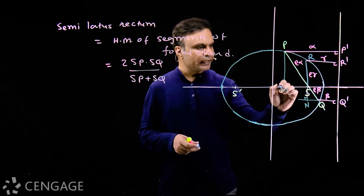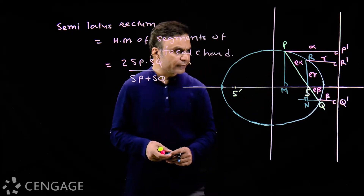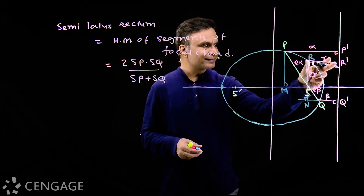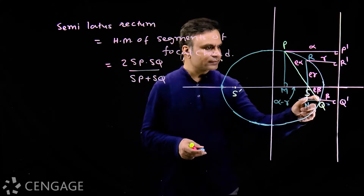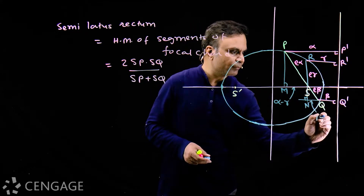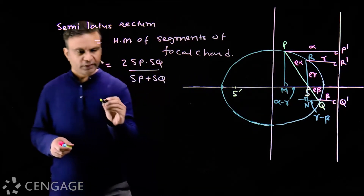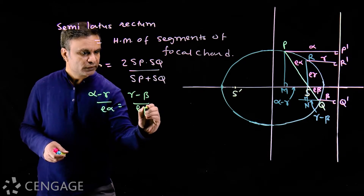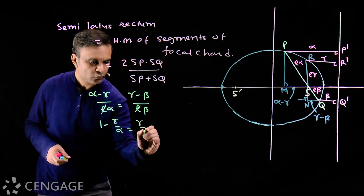We have two similar triangles: triangle PMS and triangle SNQ. Distance MS equals alpha minus gamma, and distance NQ equals gamma minus beta. From the similar triangles PMS and SNQ, we get: (alpha minus gamma) over e·alpha equals (gamma minus beta) over e·beta. From both sides e cancels out, giving: one minus gamma/alpha equals gamma/beta minus one.